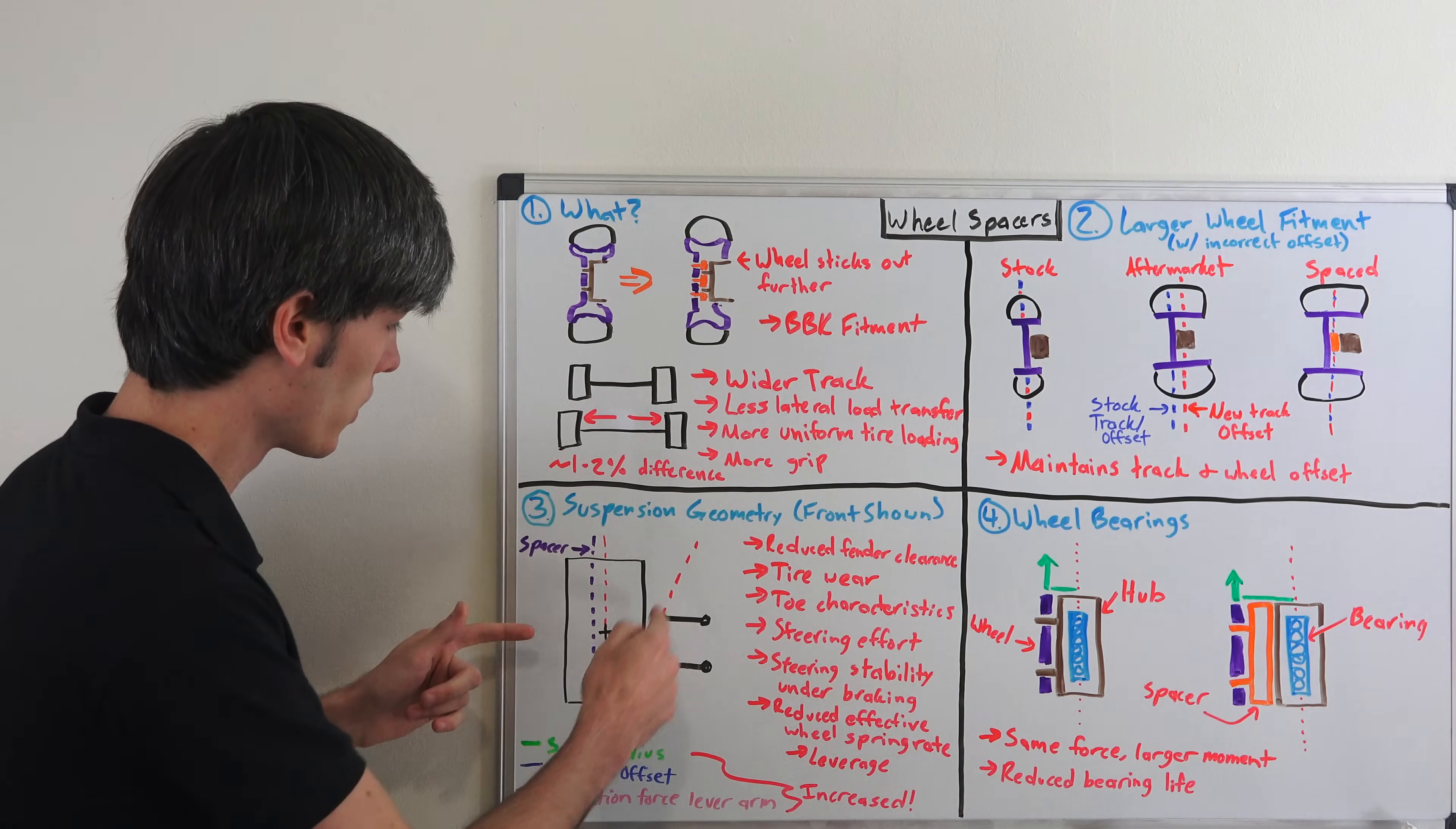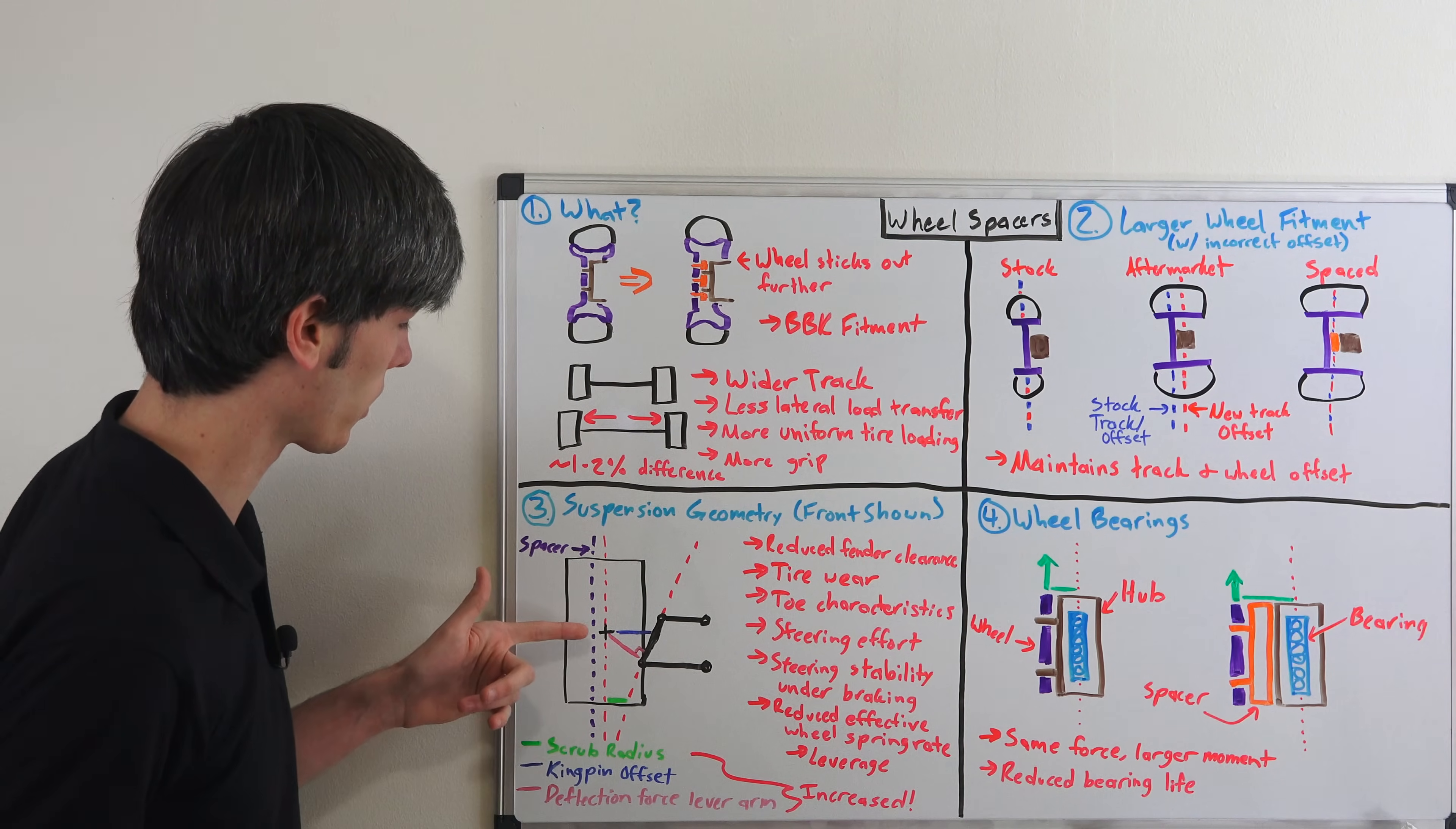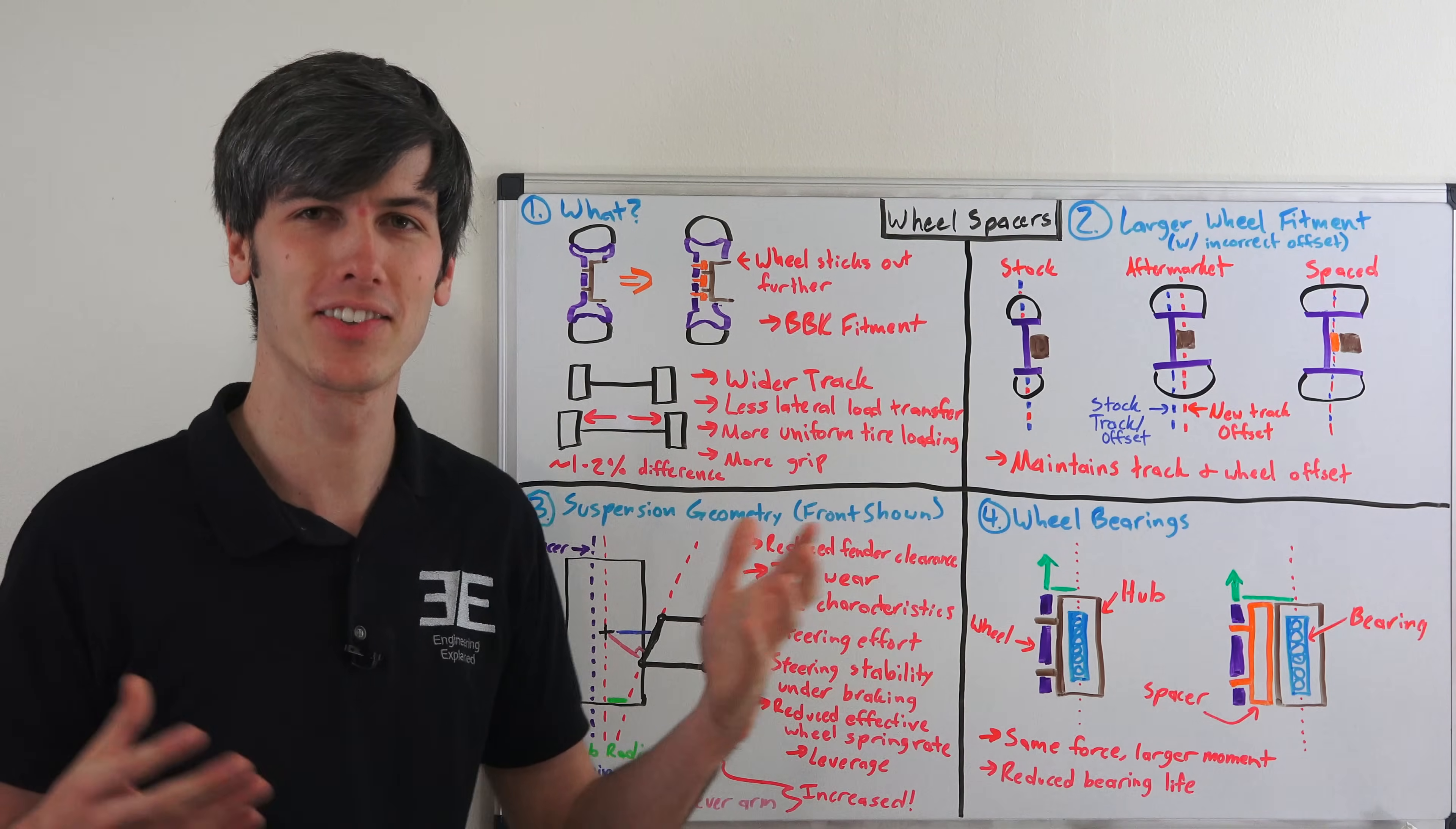And then perpendicularly to this kingpin axis, meeting up with that center point is known as the deflection force lever arm. And so this is another thing that you're going to be increasing by increasing a spacer. And I'm not going to say that I understand all of the effects of doing this, but just keep in mind that when the engineers designed your vehicle, they did because that's their job.